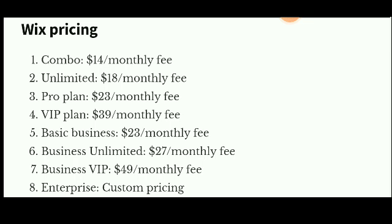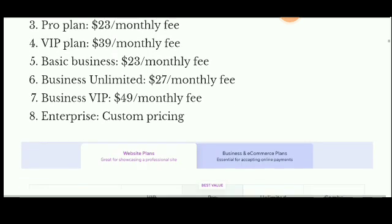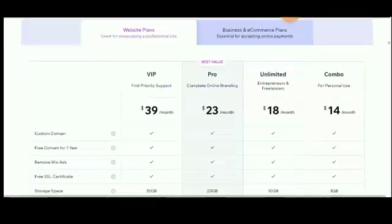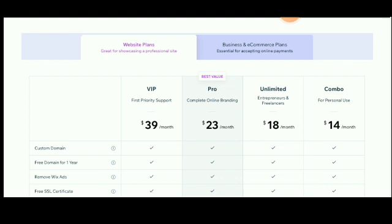Wix paid plan pricing: Combo plan is $14 to $70 per month. Unlimited plan is $18 to $22 per month. Pro plan is $23 to $38 per month. Basic Business plan is for showcasing a professional site overall. The Business and e-commerce plan is for accepting online payments.